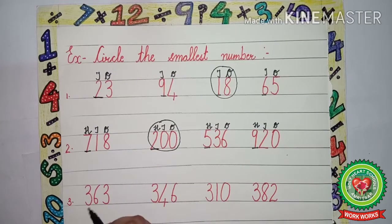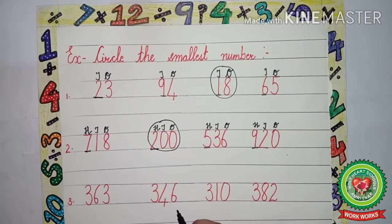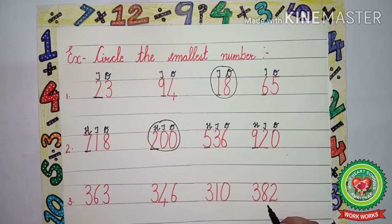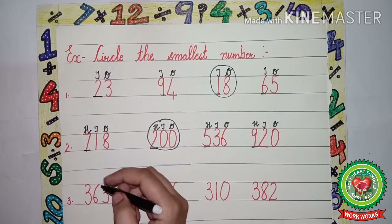Another example: the numbers are 363, 346, 310, 382. Again, we have to find out the smallest number, so first we will write down the place value chart for ones, tens, and hundreds for each number.